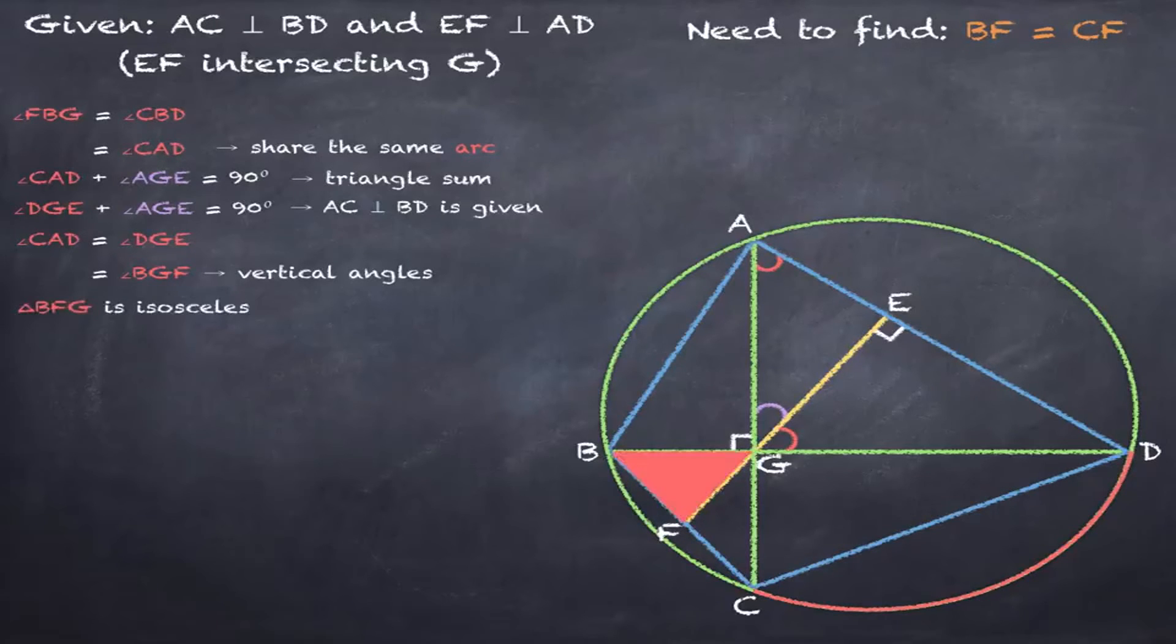Therefore, triangle BFG is an isosceles triangle. Therefore BF equals FG.